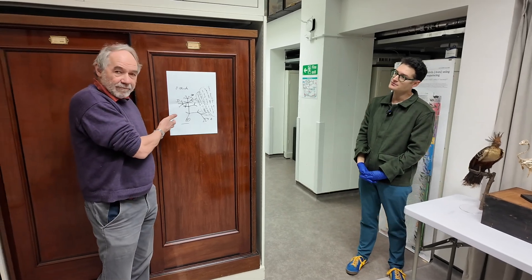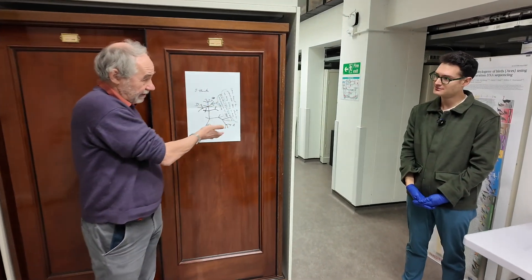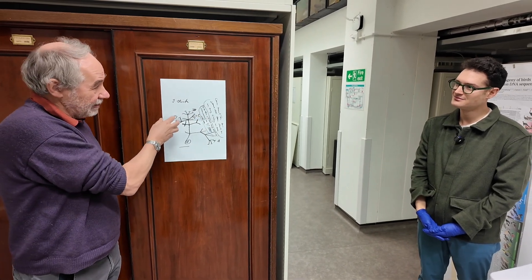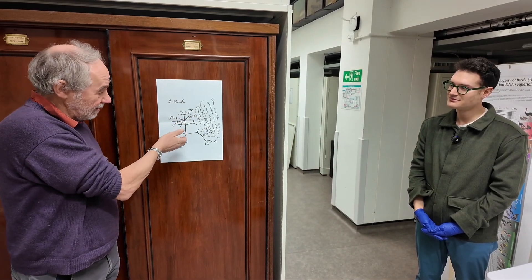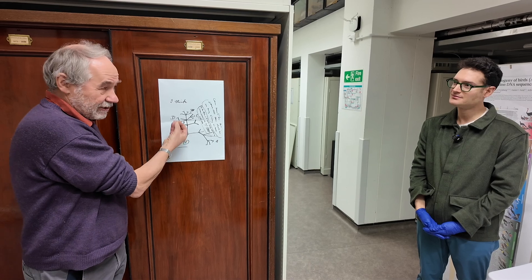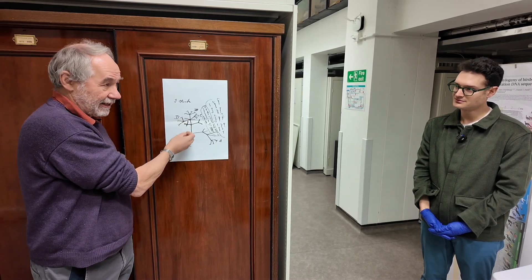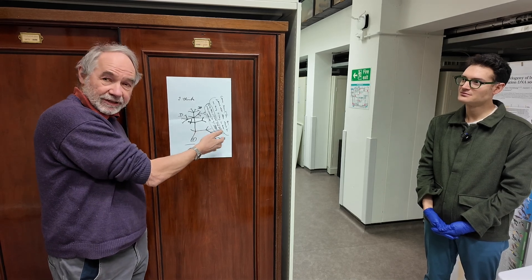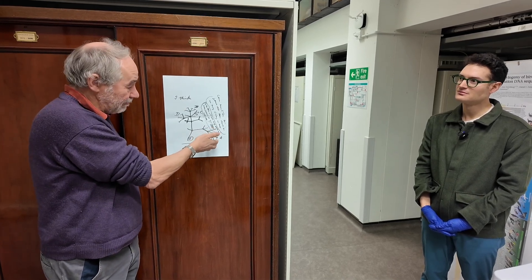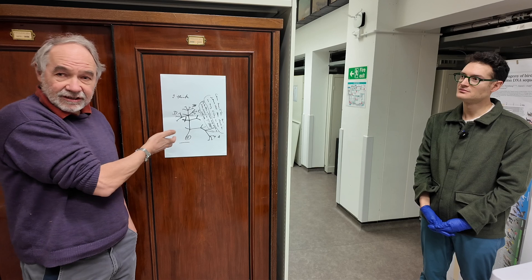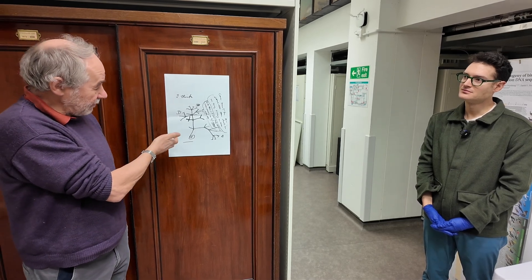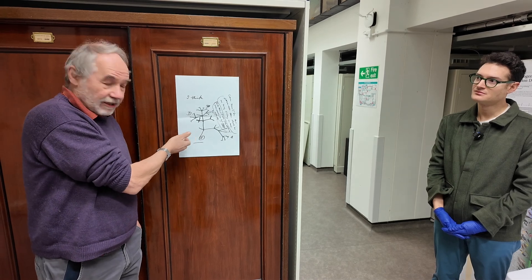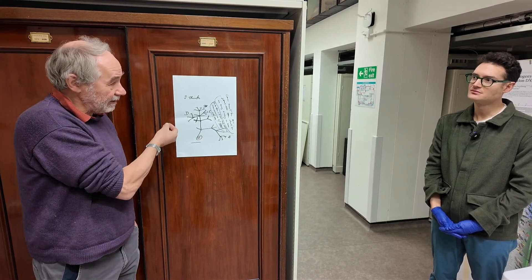So if we go back to Darwin's tree, what you're saying is we obviously want to protect the edges, and particularly if they're threatened, but we also want to make sure we protect as much of the tree as we can. So if there are branches that are isolated, we want to make sure we protect those branches in particular. And this leads to the idea of evolutionarily distinct globally endangered species — EDGE species — species of really high importance.